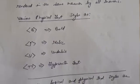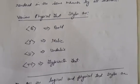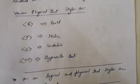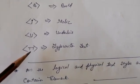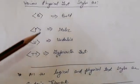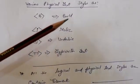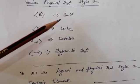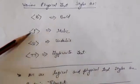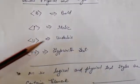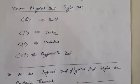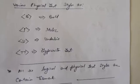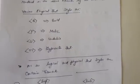Physical text style displays contents in a specific manner. Some physical text styles are: <b> for bold, <i> for italic, <u> for underline, and <tt> for typewriter text. So <b> makes text bold, <i> makes text italic, <u> gives underline to the content, and <tt> makes text appear as typewriter text — just as text appears when typed on a typewriter.